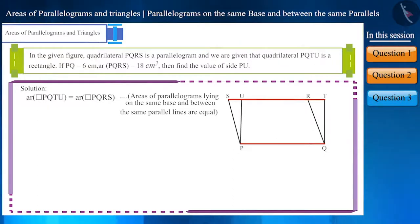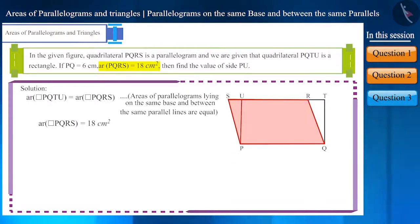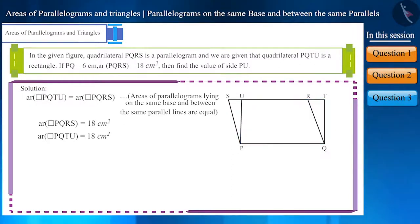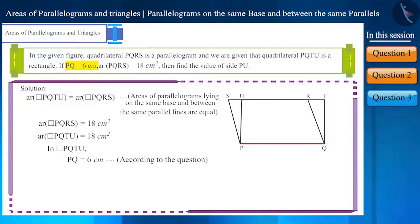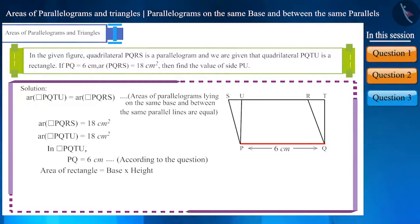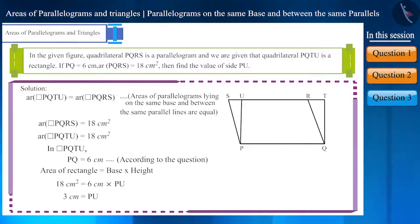We are given the area of parallelogram PQRS as 18cm². Therefore, the area of rectangle PQTU will also be 18cm². In rectangle PQTU, PQ is the base and PU is the height, where base PQ equals 6cm. Using the formula — area equals base multiplied by height — we get the value of PU as 3cm.